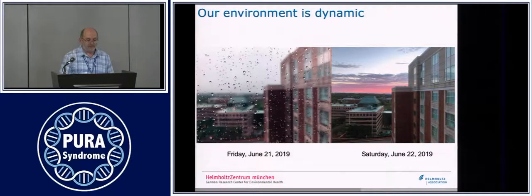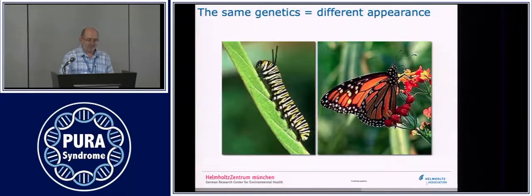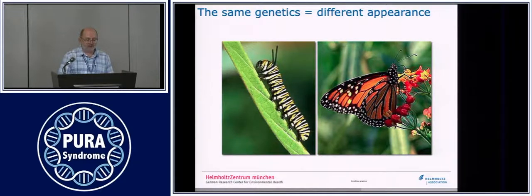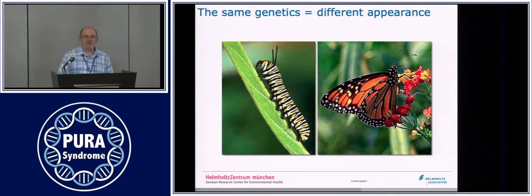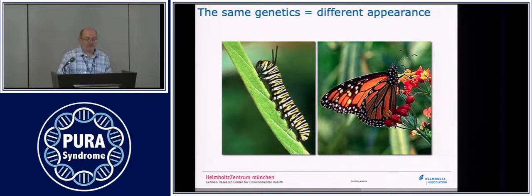Those who have seen my presentation before may remember this slide — that we may face different appearances of the same organism. To the left you see a caterpillar, which has definitively the same genome as a butterfly. As previous speakers described, genetics has information about predisposition and what can happen, but it does not really tell you what will happen.